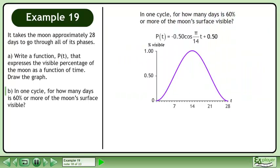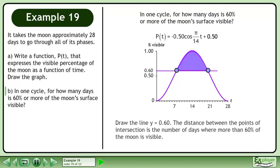Bring up the function and its graph. Draw the line y equals 0.60. The distance between the points of intersection is the number of days where more than 60% of the moon is visible.